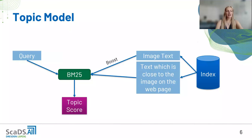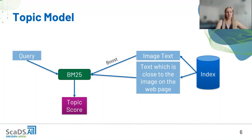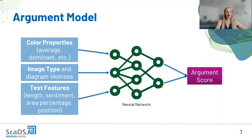The topic model uses textual matching with the BM25 algorithm from Elasticsearch. It takes the query and information from the index — specifically the text around the image on the webpage and the image text detected via OCR. The image text gets a boost in our algorithm, so if the image text matches the query, the image receives a very high topic score and is ranked higher.